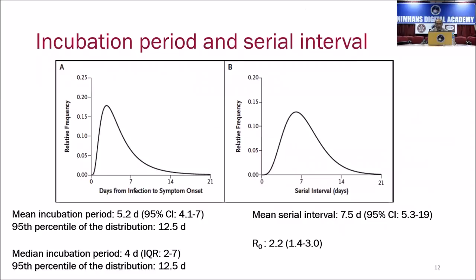What is the incubation period? These graphs show the median incubation period. The incubation period may vary from 1 day after contact to up to 14 days. Initially in China they believed it was 28 days, but after analysis of over 70,000 cases, we know that 99% of people develop symptoms in 14 days. The median incubation period is 5.2 days, meaning most people are likely to develop symptoms within 5 to 7 days.